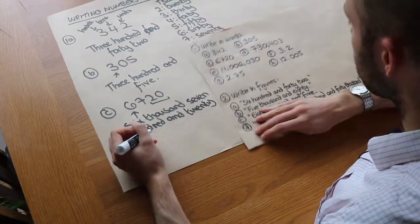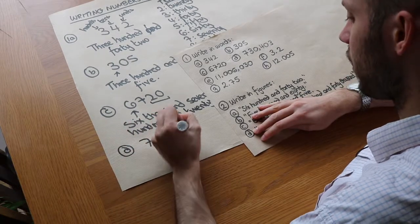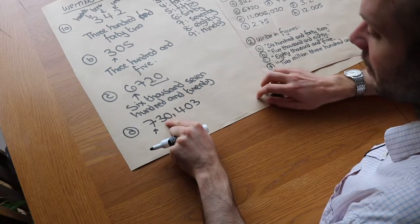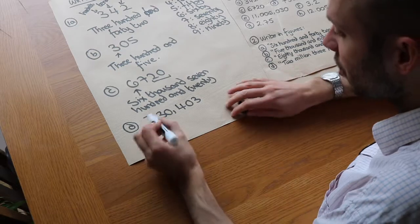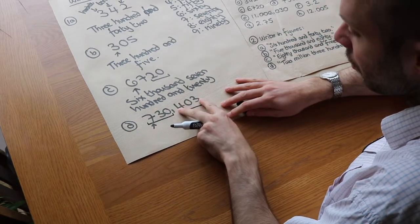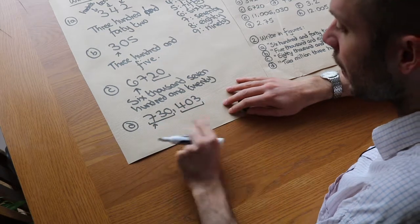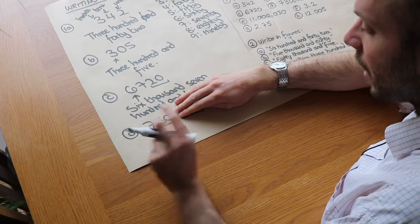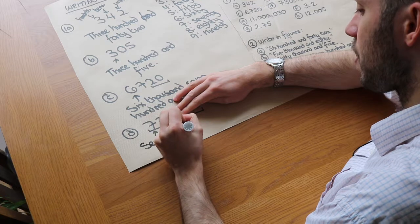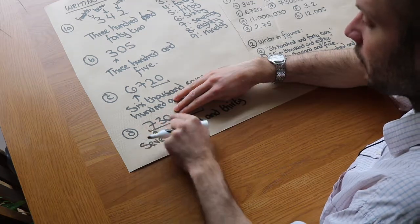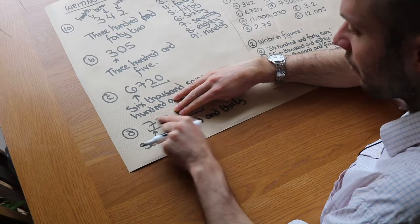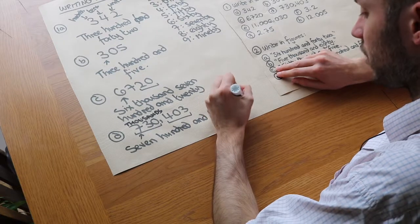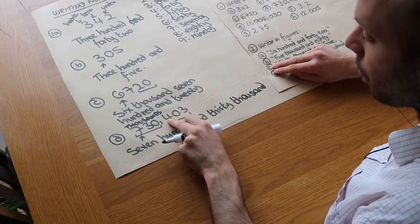The next one is seven three zero comma four zero three, which is bigger. We group the digits into threes starting from the rightmost digit. The commas indicate where the groups are. The left block, seven hundred and thirty, is the thousands block, so we have seven hundred and thirty thousand. Then we write the next block: four hundred and three.